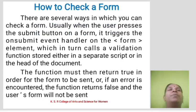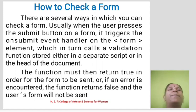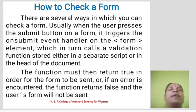How to check a form: There are several ways in which you can check a form. Usually when the user presses the submit button, it triggers the onsubmit event handler on the form element, which in turn calls a validation function stored either in a separate script or in the head of the document. The function must then return true for the form to be sent, or if an error is encountered, the function returns false and the user's form will not be sent.